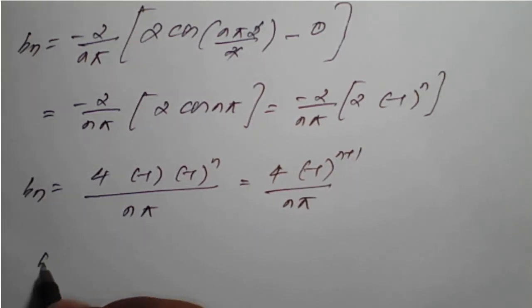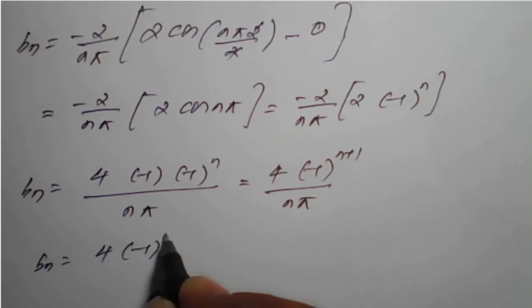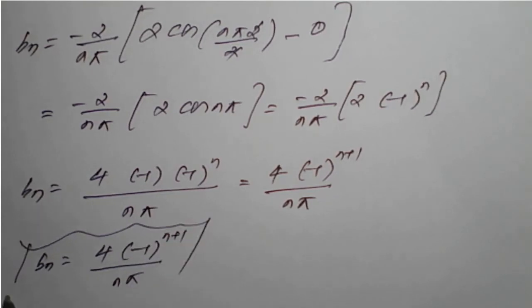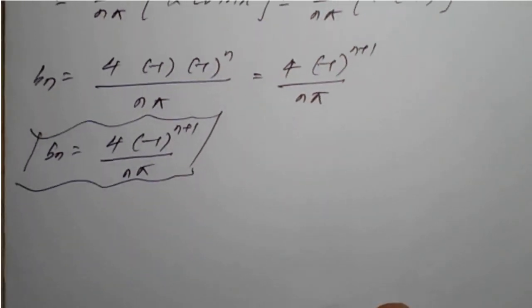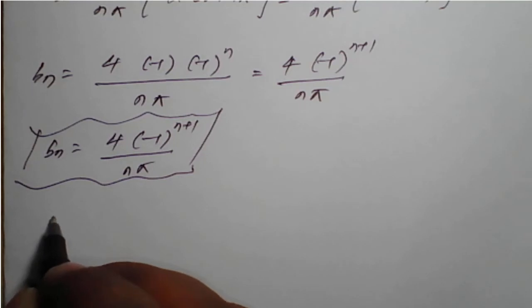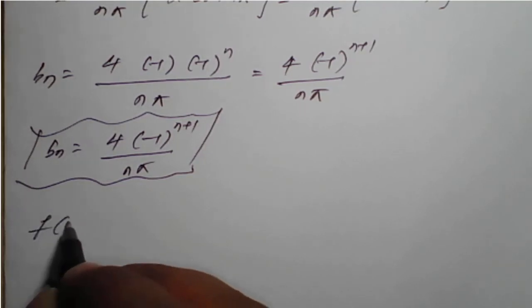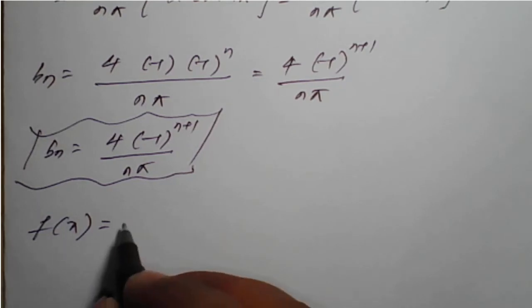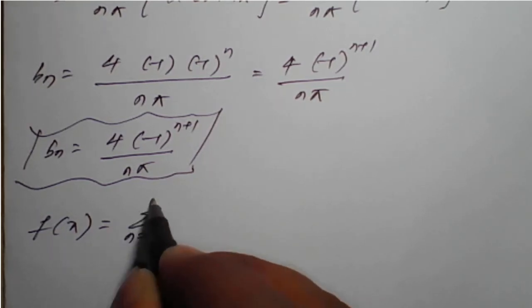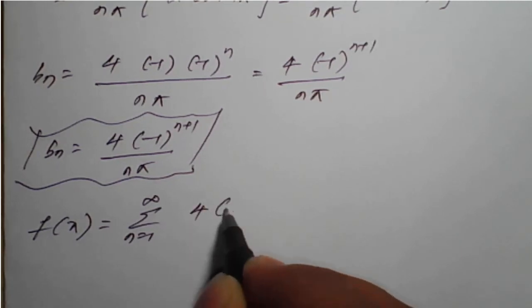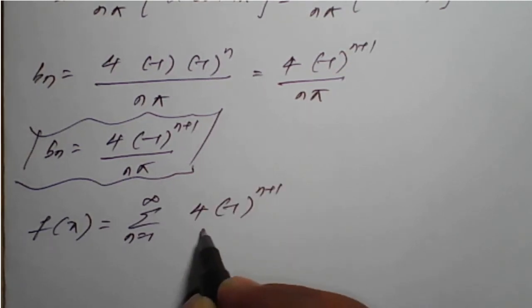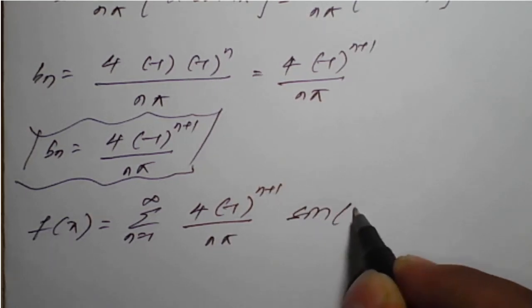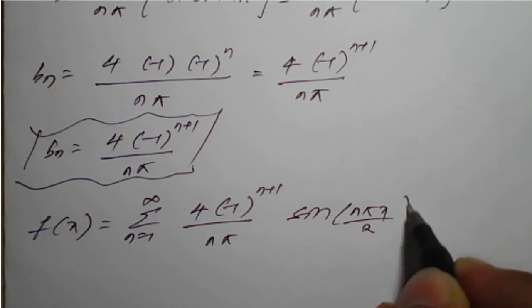Therefore, the Fourier coefficient b_n = 4(−1)^(n+1) / (nπ). Our half range Fourier sine series is: f(x) = summation from n=1 to infinity of [4(−1)^(n+1) / (nπ)] times sine(nπx / 2).